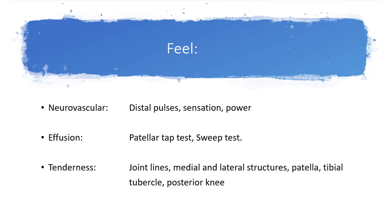For the feel component, do the neurovascular exam first — not because it's most important, but so you don't forget. Start distally: feel the dorsalis pedis pulse, check sensation, and it's done. Then check for an effusion using two tests. The patella tap test: normally the patella sits on the femur, but with an effusion it lifts off, and tapping it down produces a click you can feel or hear. The sweep test: sweep the outside of the knee to translate fluid to the medial side and observe the medial bulge. Then assess tenderness in a structured, anatomical manner, starting proximal and working downward.